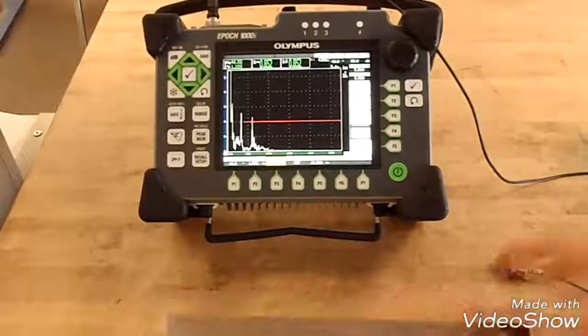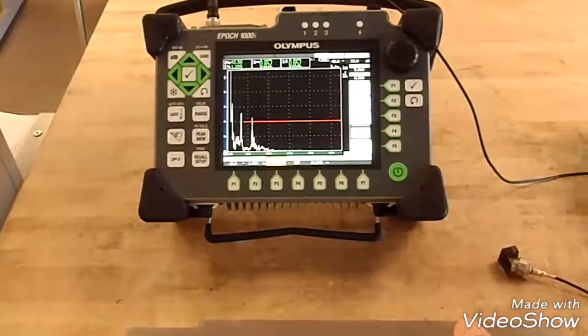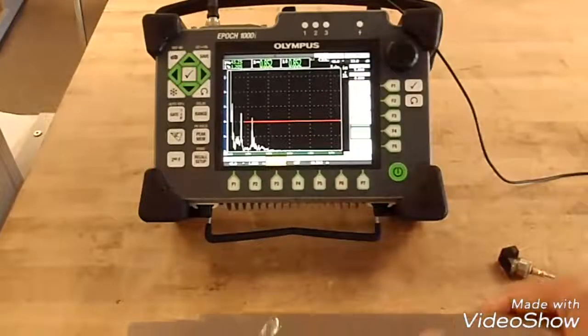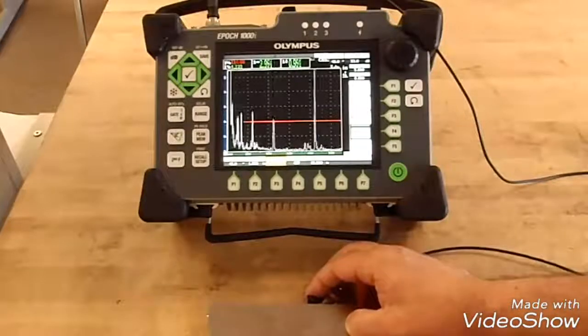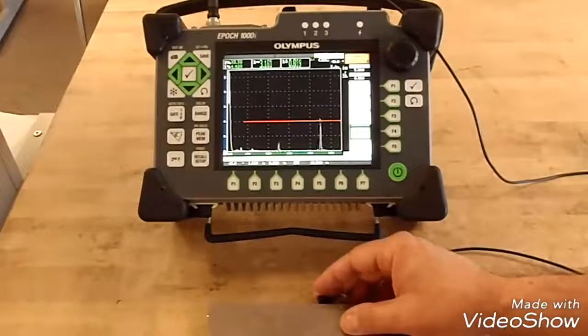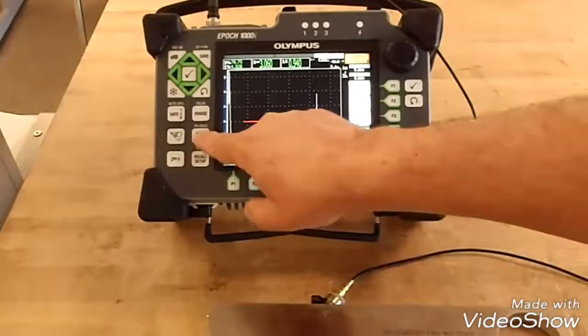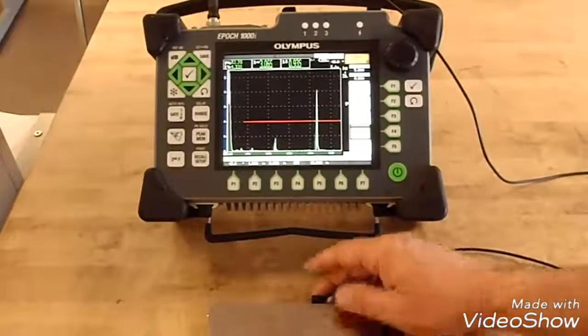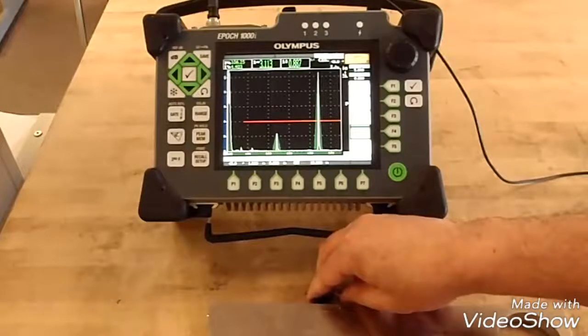Now the first thing you want to do is couple your transducer to your wedge and find your beam index point. Turn the gain down some so I can see that reflector. What's nice about this unit, you can use the peak memory and you can peak your signal.